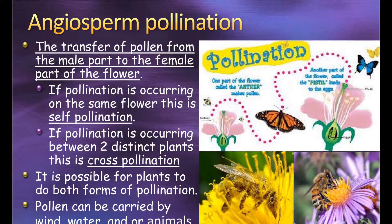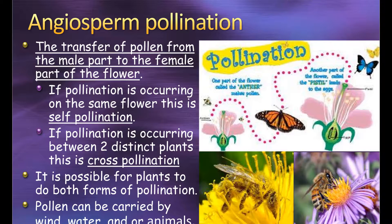Pollination is the transfer or movement of pollen from the male part of the flower to the female part. There are two types: self-pollination, occurring on the exact same flower, and cross-pollination, occurring between two separate flowers. Self-pollination moves pollen from the male to the female part of flower A, while cross-pollination moves pollen from flower A to flower B. Pollination is normally aided by animals, wind, or water — it's not the flower itself that moves its own pollen.